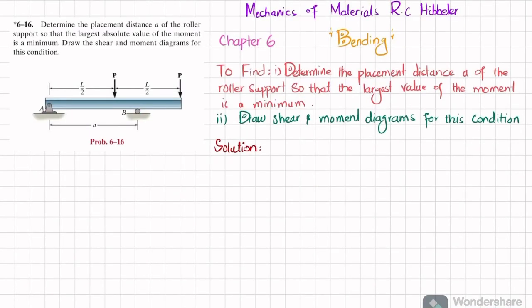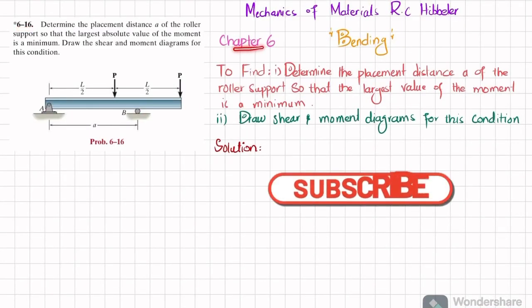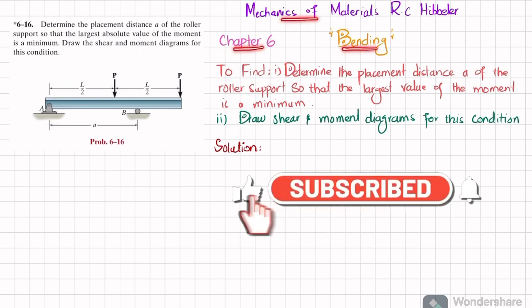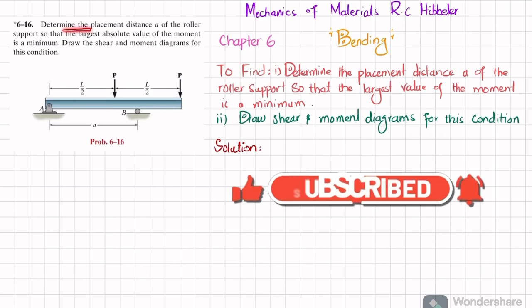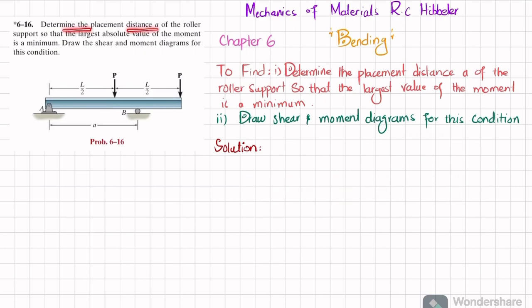Welcome back. Problem 6-16 is taken from chapter number 6, that is Bending, from the book Mechanics of Materials by R.C. Hibbeler. The statement is: determine the placement distance A of the roller support so that the largest absolute value of moment is minimum. Draw the shear and moment diagram for this condition.